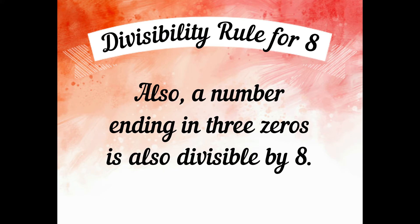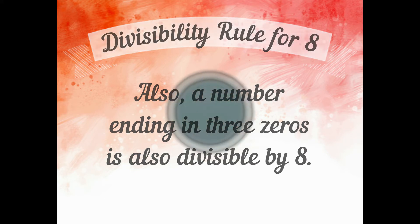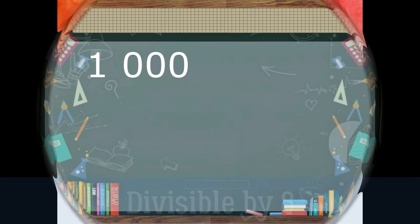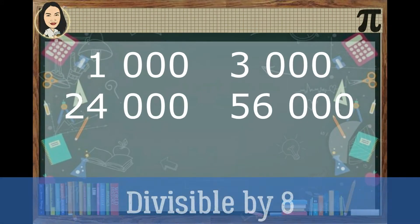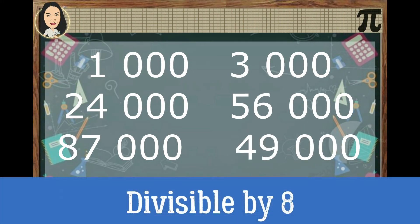Divisibility Rule for 8 also states that a number ending in 3 zeros is divisible by 8. Some examples are 1,000; 3,000; 24,000; 56,000; 87,000; and 49,000.